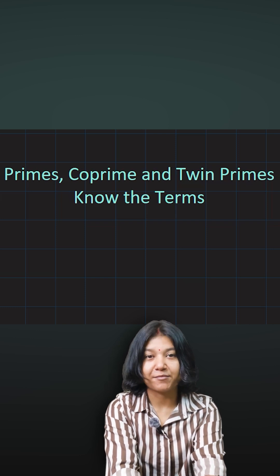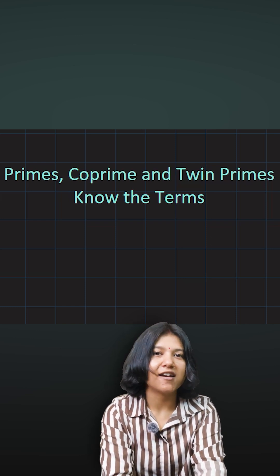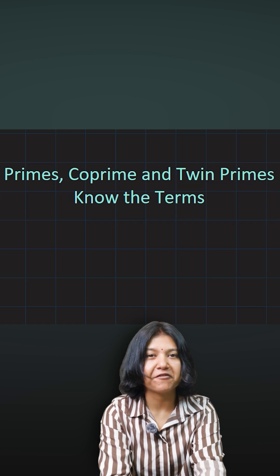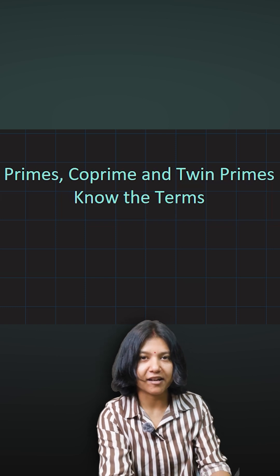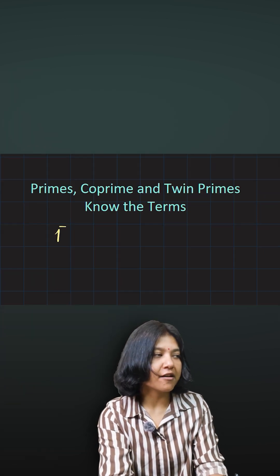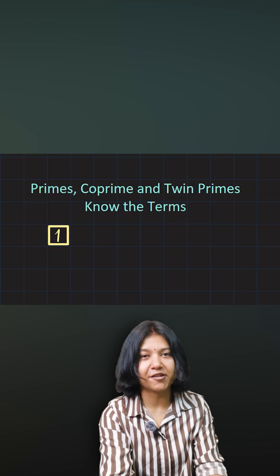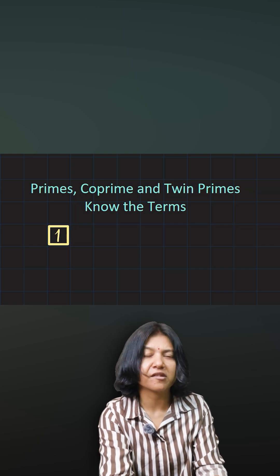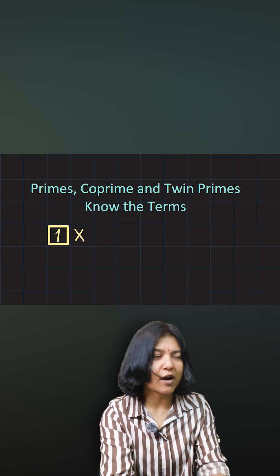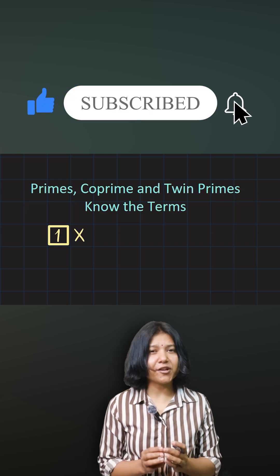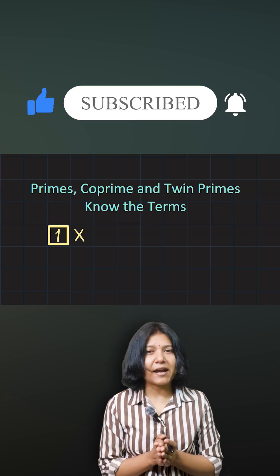Prime numbers are very special. I'm sure you already know what prime numbers are. They are characterized by having exactly two factors. Remember that one, the number one itself, is neither prime nor composite. The opposite of prime numbers are composite numbers.